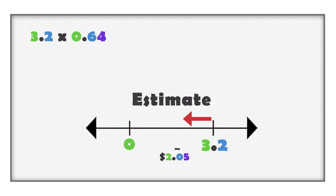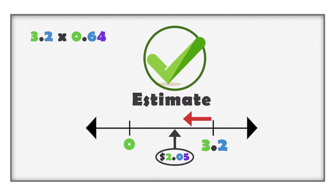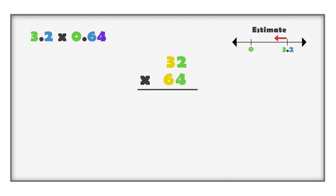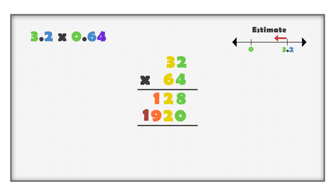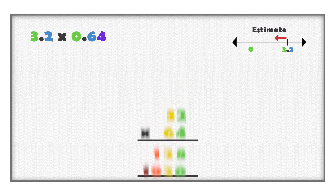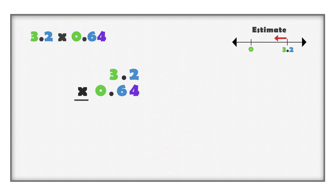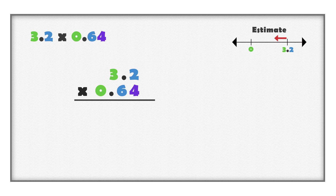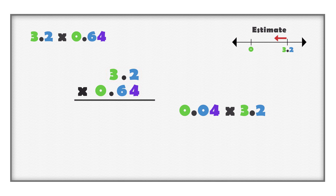How does this compare to our estimate? You can use an algorithm to multiply whole numbers, and the same algorithm can be used when multiplying decimal values. When using the algorithm, line the digits up on the right. Multiply the digits of the second number with the first number. Multiply four hundredths with three and two tenths, and then multiply six tenths with three and two tenths.